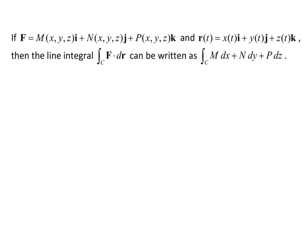If capital F equals M of x, y, z times i, plus N of x, y, z times j, plus P of x, y, z times k, and R of t equals x of t i plus y of t j plus z of t k, then the line integral over curve C of F dot dr can be written as the line integral over curve C of M dx plus N dy plus P dz.